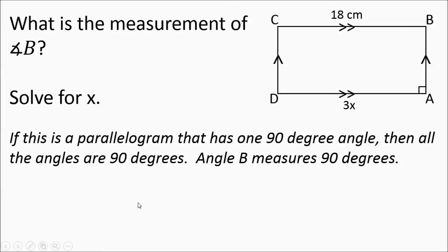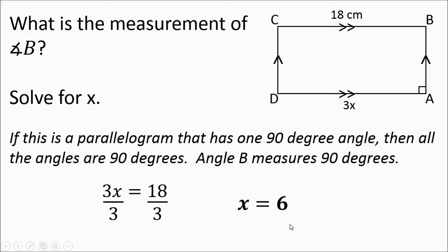Now let's solve for X. We have side CB and side DA — they're opposite each other, and in a rectangle opposite sides are congruent. So 3X equals 18. Dividing out the 3, X works out to 6.